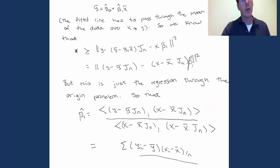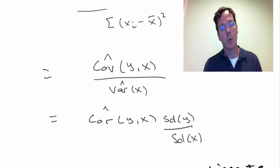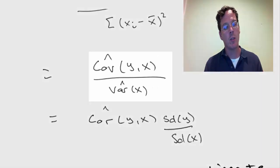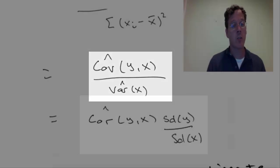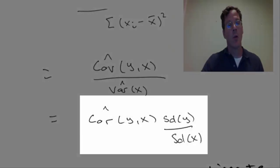Well, what does this work out to be? We can work through it a little bit and it basically just comes out to be exactly the covariance between y and x divided by the variance of x. Or in other words, that it's the correlation between y and x times the standard deviation of y divided by the standard deviation of x.